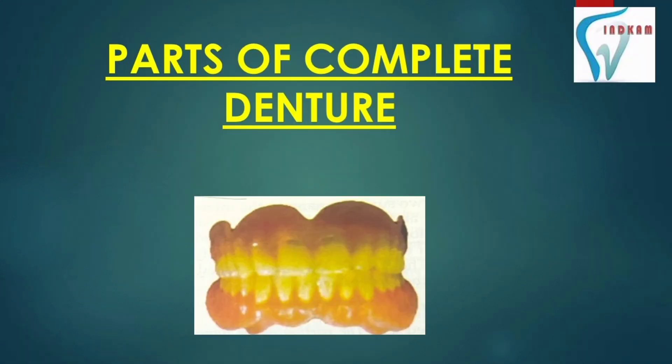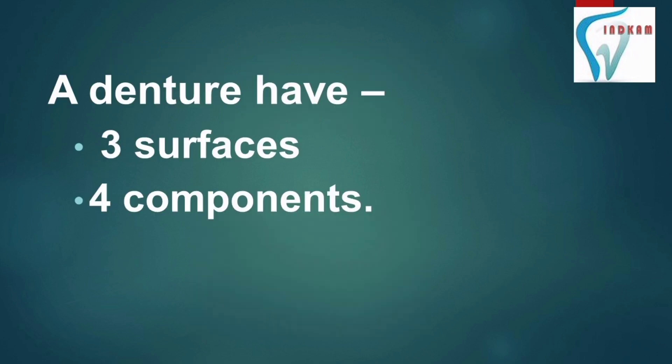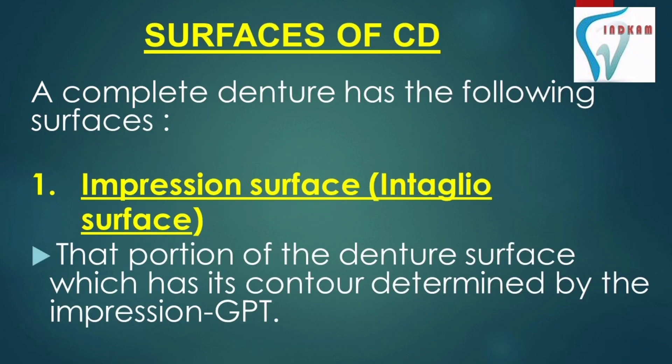Hello friends, today we are going to learn about parts of a complete denture. A complete denture has three surfaces and four components. Let's begin with surfaces first.